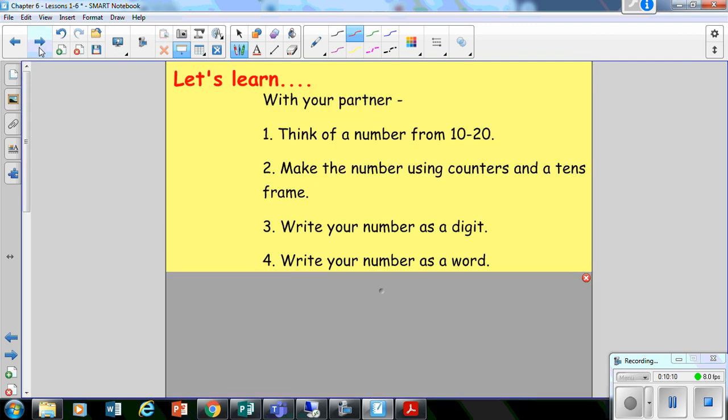Okay. So once you've had a little bit of a practice doing that, you are going to do this with your partner. You're going to pause the video. With your partner at hand, you're going to think of a number from 10 to 20. You're going to make that number using a tens frame and any objects that you like instead of counters. You are going to write that number as a digit.